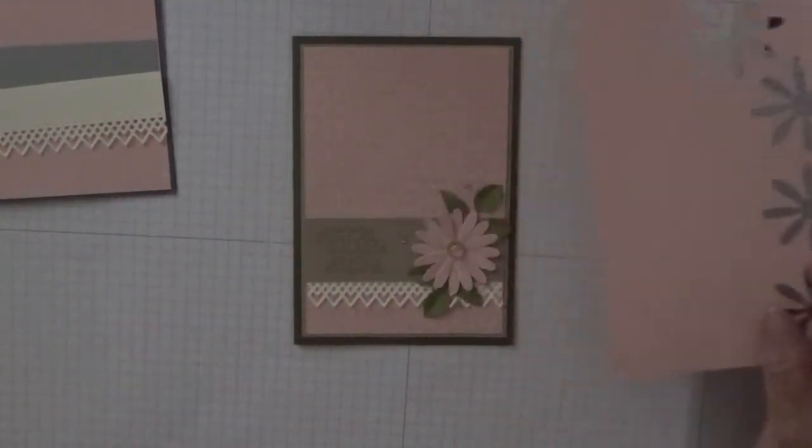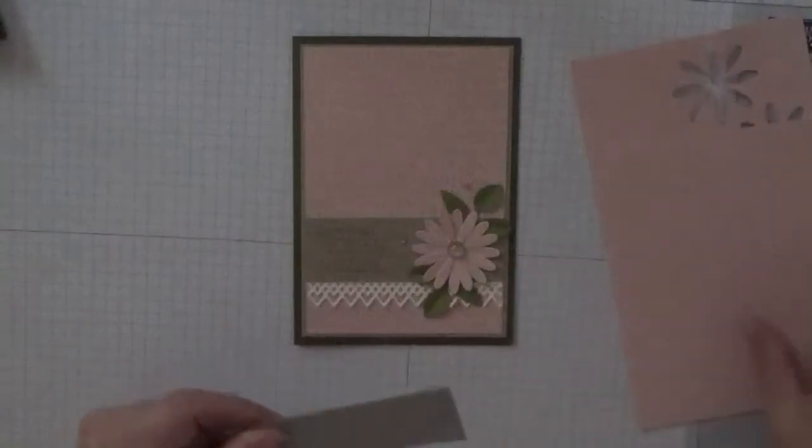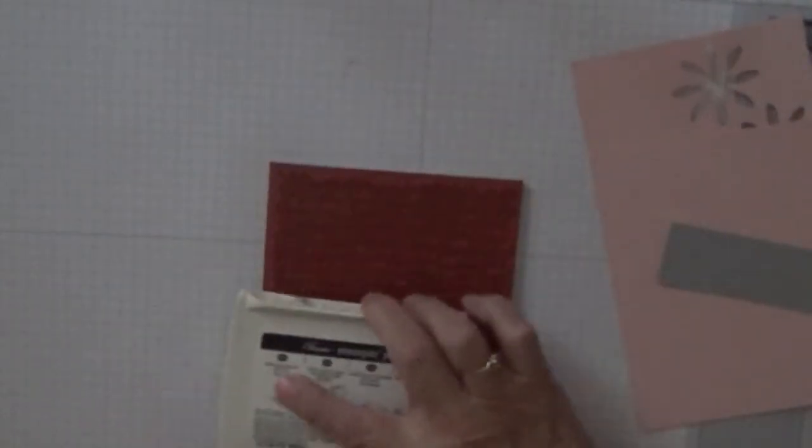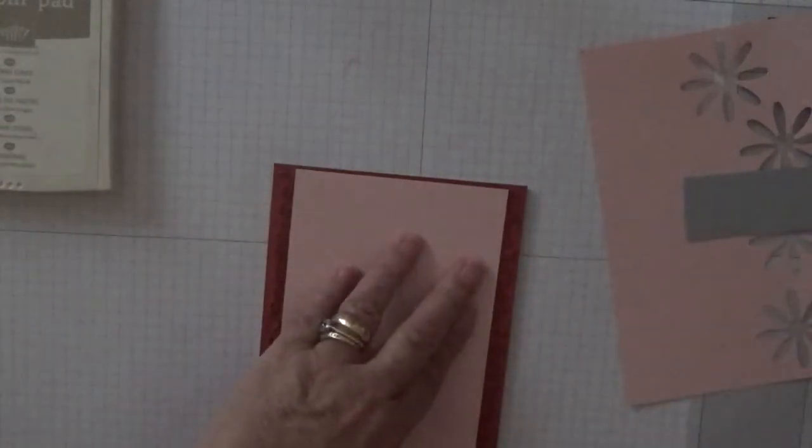So first of all we will do our stamping. We need that for the daisies, that for the background and that for the sentiment. We'll do the background first. I'm just going to leave that on my paper and ink it up in crumb cake. And place the cardstock on top of it.